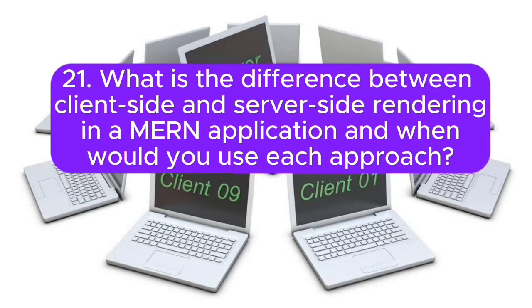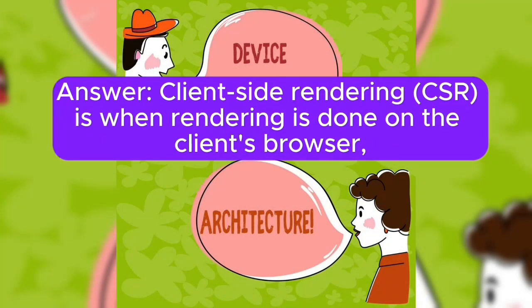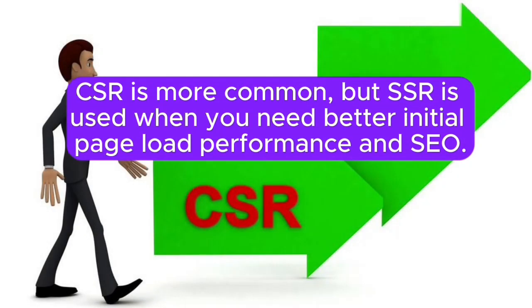21. What is the difference between client-side rendering (CSR) and server-side rendering (SSR) in a MERN application, and when would you use each approach? Answer: Client-side rendering (CSR) is when rendering is done on the client's browser, while server-side rendering (SSR) is when rendering is done on the server. CSR is more common, but SSR is used when you need better initial page load performance and SEO.